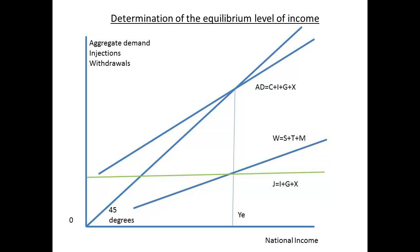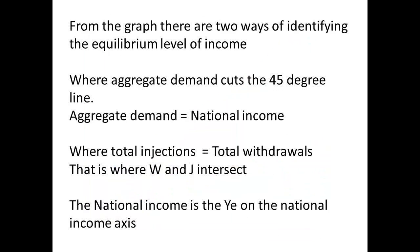Here is that mapped out as a graph. The equilibrium level of income is represented by YE. Total withdrawals, total injections, and aggregate demand together are represented by the 45-degree line. Where the aggregate demand line meets the 45-degree line, and where the withdrawals and injection lines intersect, are both points where we can measure the equilibrium level of income.